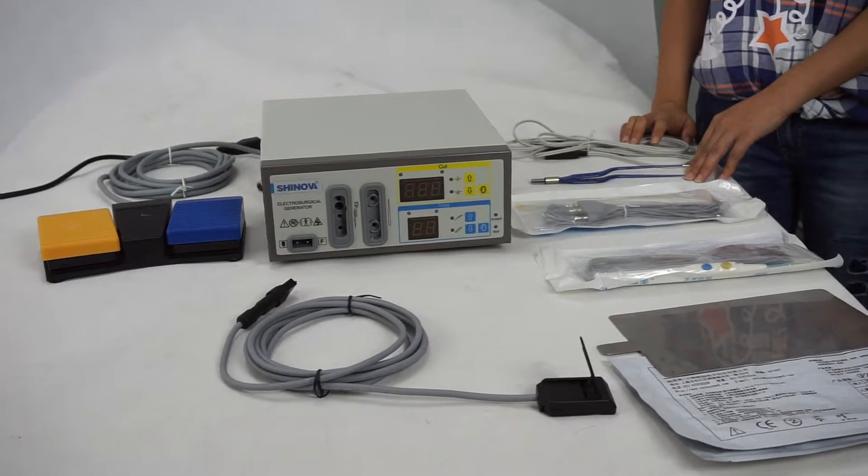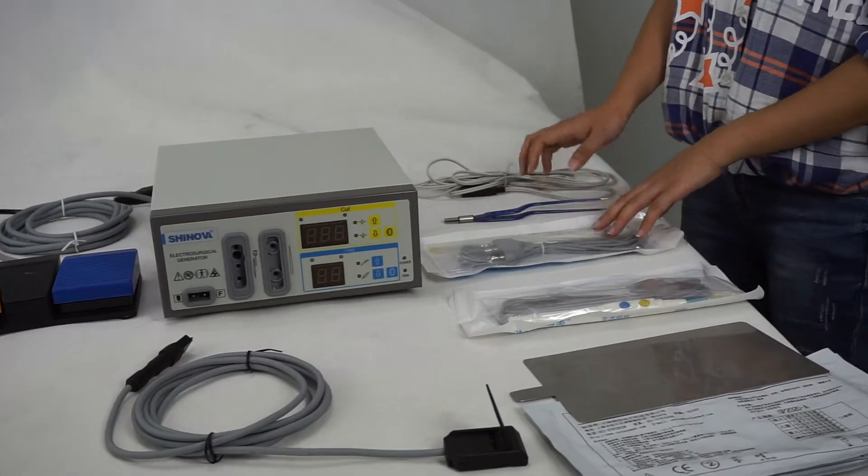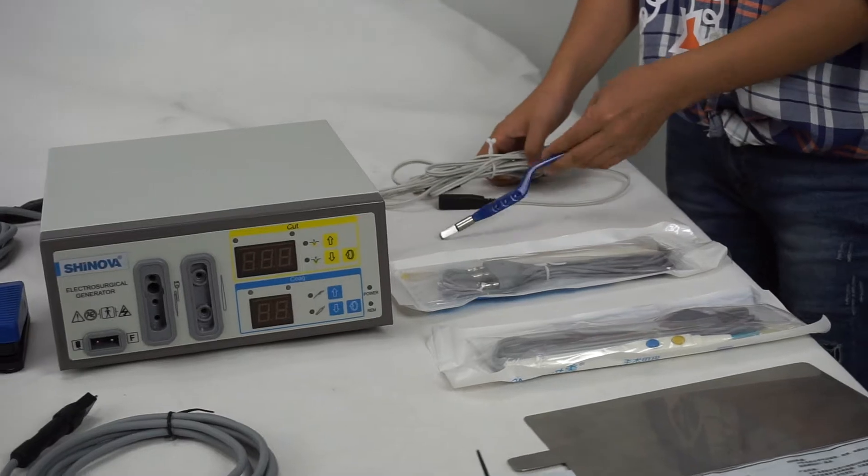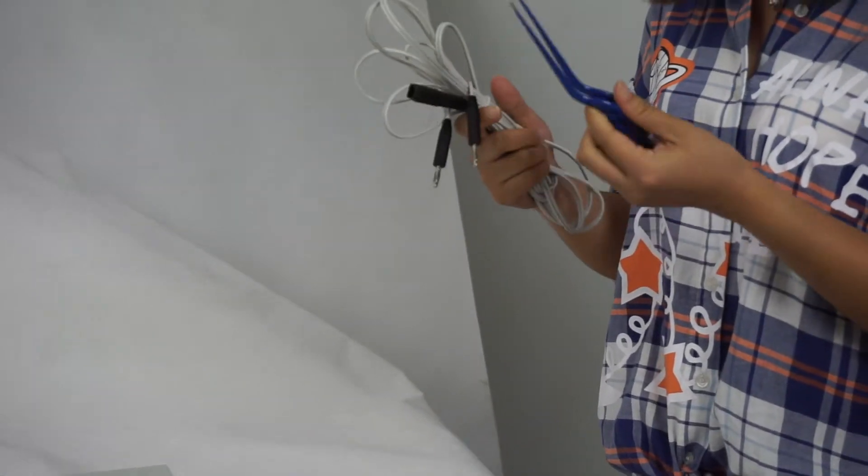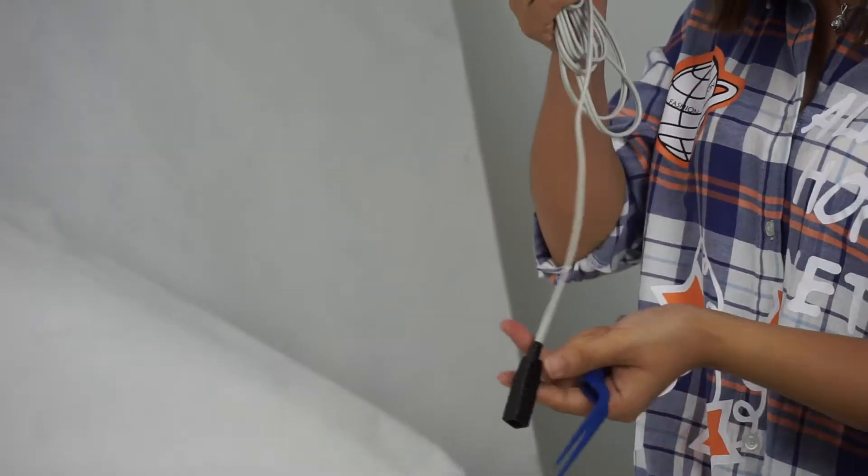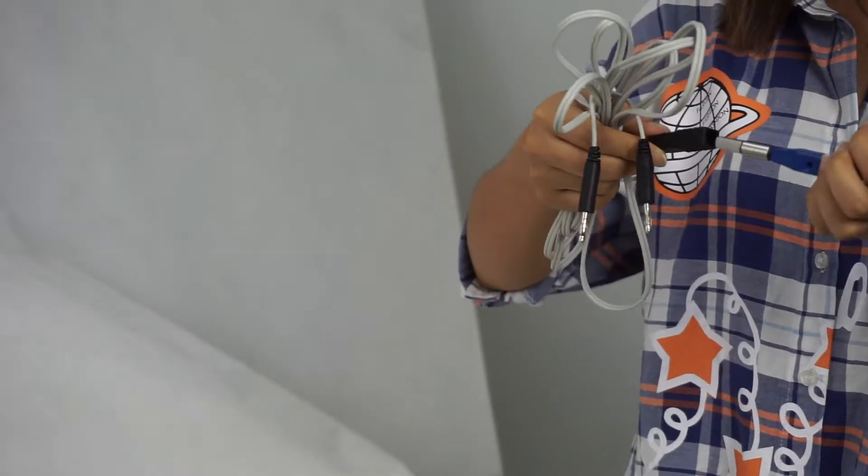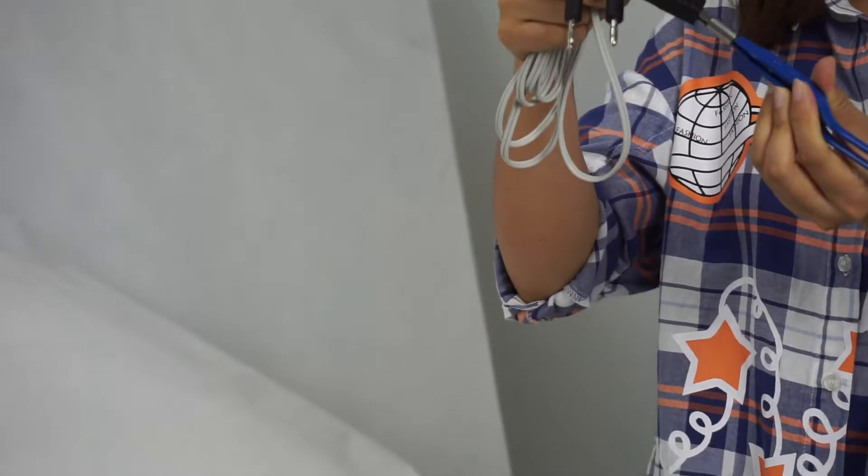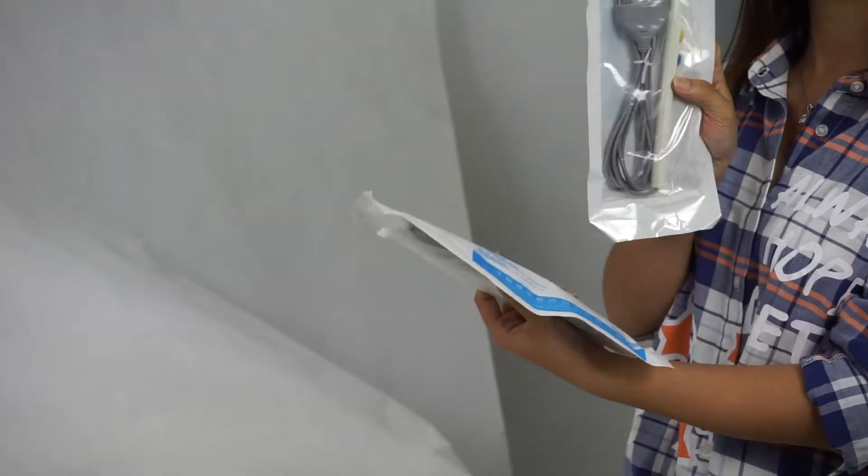It consists of the main unit and accessories. Now let's take a look at the accessories. This is bipolar forceps and the cable is connecting the forceps like this way. And next, the disposable electrosurgical pencil, tool piece.